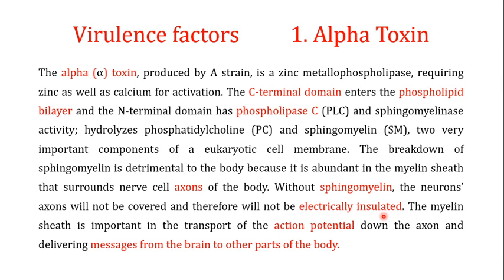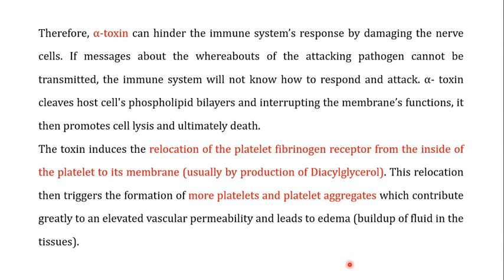The myelin sheath is important in the transport of action potentials — the transfer of messages from one area of a neuron to another, or from one neuron to the next — delivering messages from the brain to other parts of the body. If the alpha toxin degrades sphingomyelin and damages nerve cells, it can hinder the immune system response, since messages about the location and amount of attacking pathogen cannot be transmitted by the nervous system.